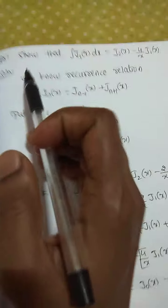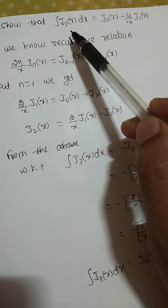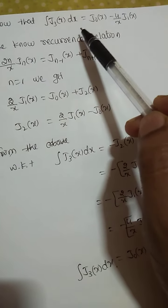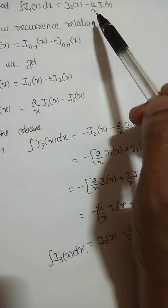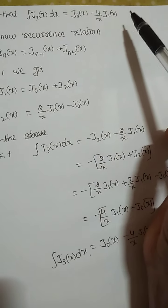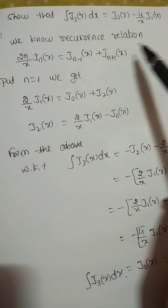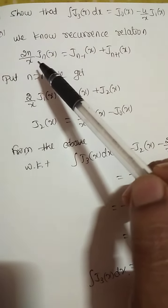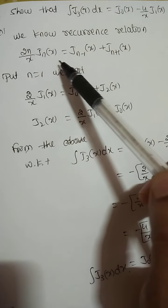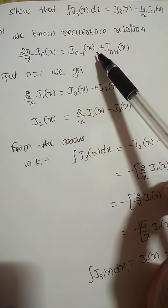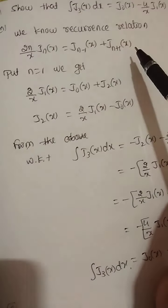Next example: show that the integral of J_3(x) dx equals J_0(x) minus (4/x) J_1(x). Solution: we know the recurrence relation (2n/x) J_n(x) equals J_{n−1}(x) plus J_{n+1}(x). Put n equals 1 to get started.